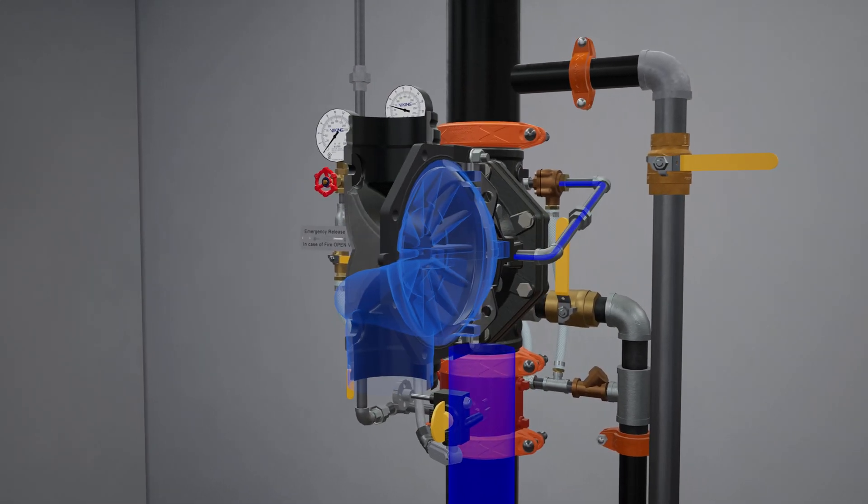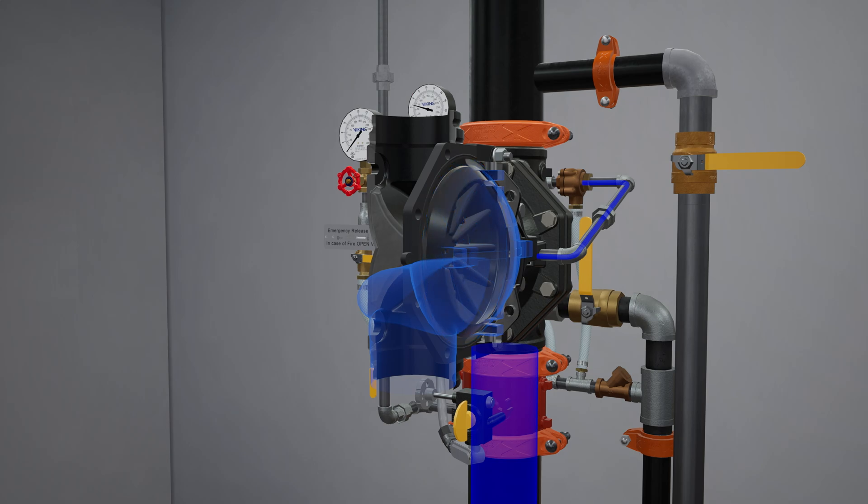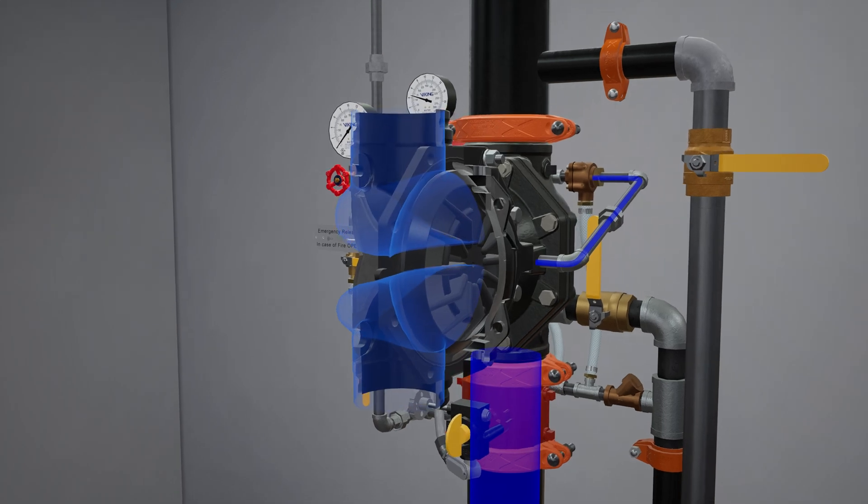Once enough pressure is released, the clapper can no longer be held back by the water in the priming chamber. The clapper is forced open, filling the valve body and surrounding trim with water.